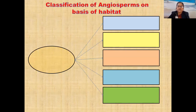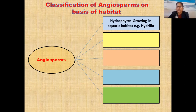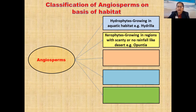Classification of Angiosperms on the basis of habitat. These are divided into five different types. First type: Hydrophytes — plants growing in aquatic habitat. Example: Hydrilla. Second type: Xerophytes — plants growing in regions with scanty or no rainfall, like desert. Example: Opuntia.